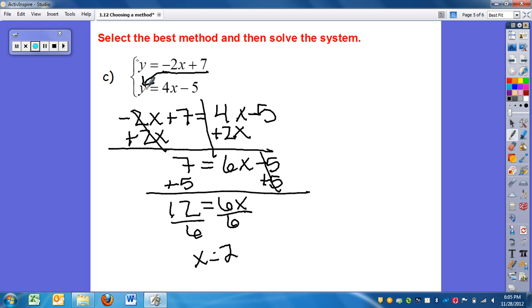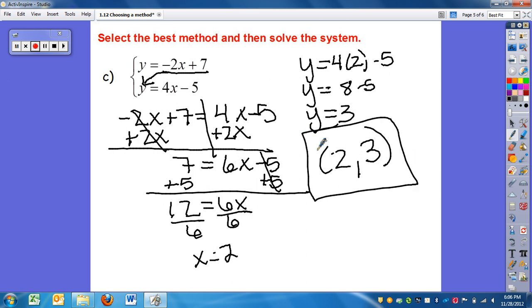So my x coordinate is 2. So I'm going to plug it into one of the two. I'm just going to do the bottom one real quick. So I have 4 times 2 minus 5, which gives me 8 minus 5. So y equals 3. So my solution where these two lines would intersect is 2, 3. And again, I can check on the top one. Negative 2 times 2, because that's my x coordinate, is negative 4. Plus 7 is 3. So this is my correct answer.